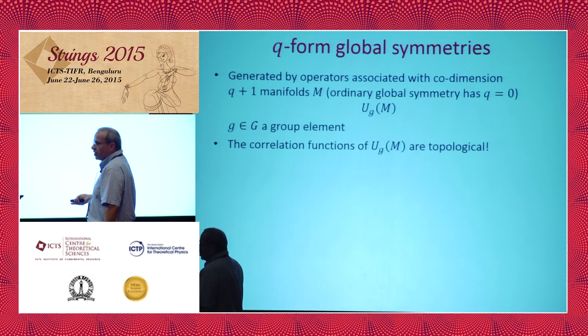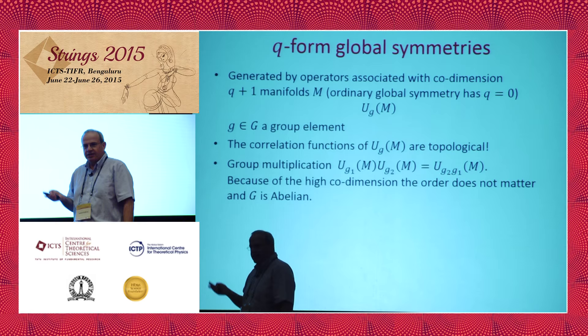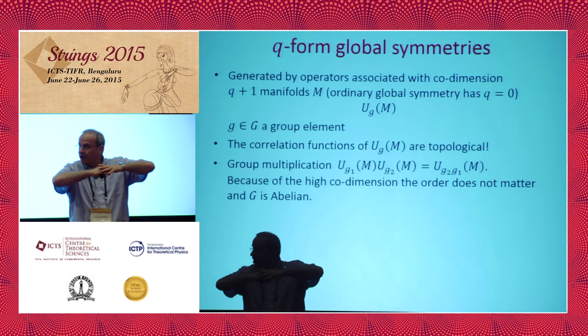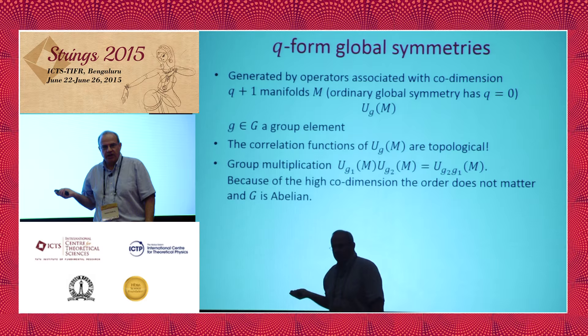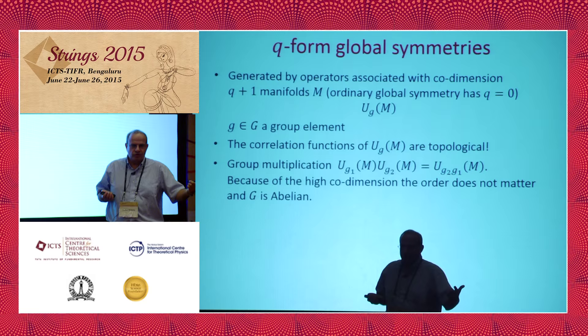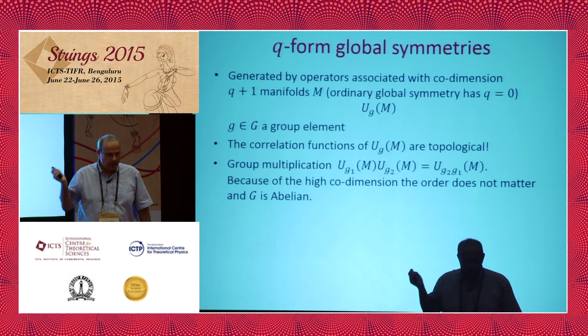The correlation functions of these objects U are topological, and we can multiply them. Here we already get something new: since M has high co-dimension, it doesn't mean anything to say that we multiply in one order or another, because we can always slide one around the other due to the high co-dimension. Therefore, necessarily, the symmetry has to be abelian. In the gauge version, we always knew these higher-form symmetries are abelian, but there was always a nagging feeling that maybe there's a non-abelian version. Here I'm discussing the global symmetry, and it's manifestly abelian.